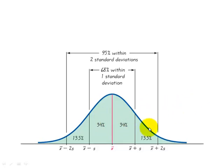Now if we go two standard deviations below the mean — one, two — and two standard deviations above the mean, in this middle area here we expect it to contain 95% of the data.